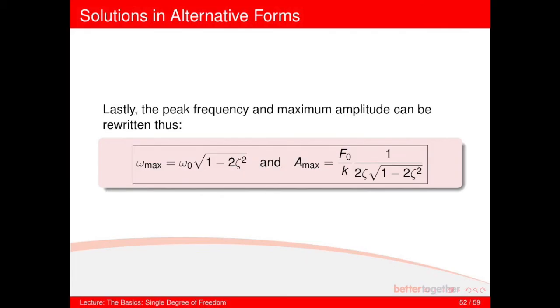So basically, it's just taking the equations that we covered last week and putting them in alternative forms in terms of zeta and things like that. And again, we've covered this briefly on the frequency that results in the maximum amplitude, as defined there, omega 0 square root of 1 minus 2 zeta squared. And the amplitude of maximum frequency is F 0 upon K times by this term.